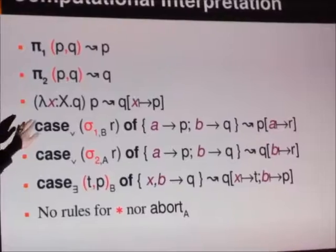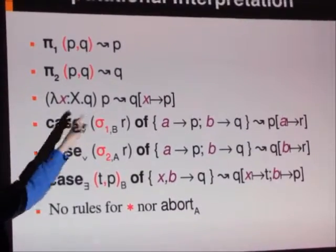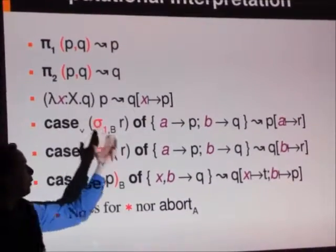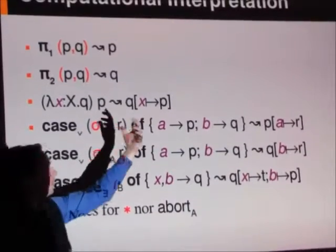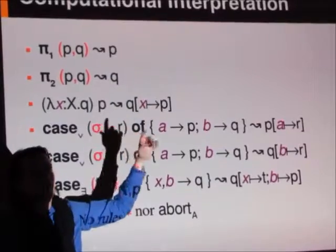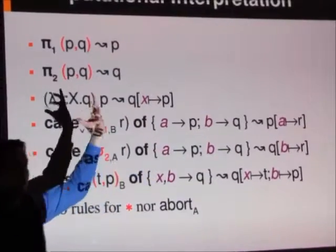And lambda x dot q, if that is modus ponens applied to p, that will evaluate to your expression q with all the occurrences of x in it, which were the closed hypotheses.